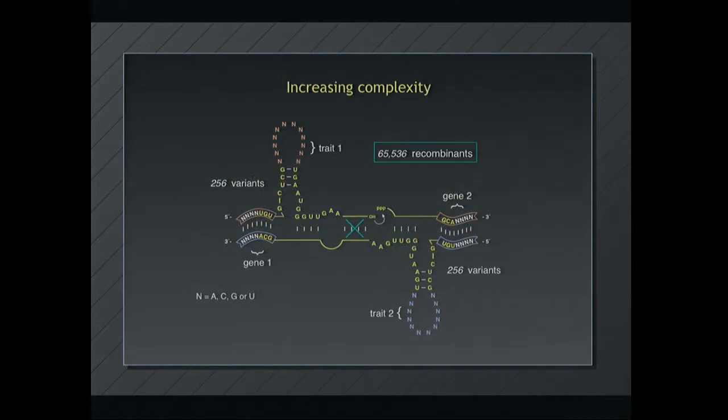Now we're ready for more complexity. And this is the size libraries we're playing with now. So these are 256 by 256. Now we have N, N, N, N moved out one position with a leader sequence on the front end here. And our combinatorial space now is over 65,000 possible recombinants. And now rather than have the same sequence in the trait region, we're going to have different sequences in the trait region encoded by, associated with, different corresponding sequences in the genetic region for each of the two loci.